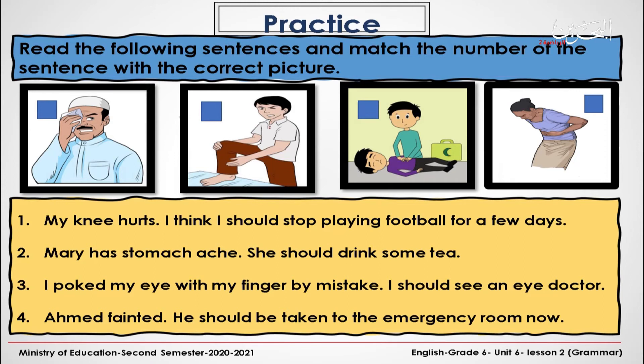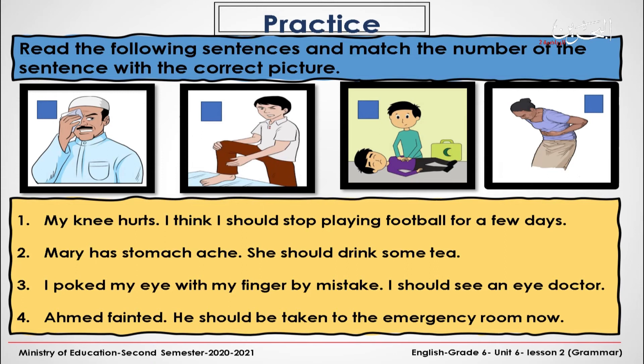Read the following sentences and match the number of the sentence with the correct picture. I am going to read the sentences for you. Number one: My knee hurts. I think I should stop playing football for a few days. Number two: Mary has stomach ache. She should drink some tea. Number three: I poked my eye with my finger by mistake. I should see an eye doctor. Number four: Ahmed fainted. He should be taken to the emergency room now. You have 30 seconds. Start.